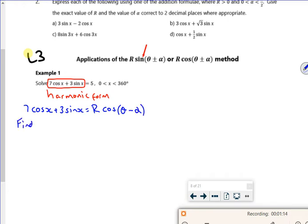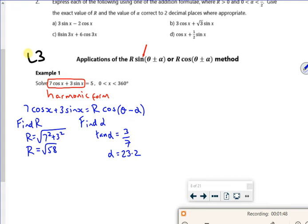So to find r, it's just Pythagoras, which according to the pack gives us root 58. Which it does, 49 plus 9. And then to find alpha, I always do the second one over the first one. But if that was a minus 3, I'd ignore the sign.